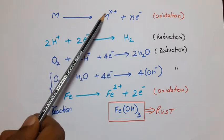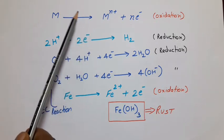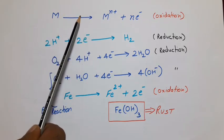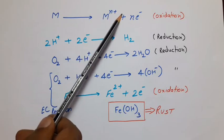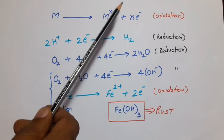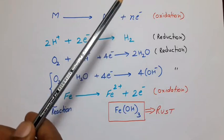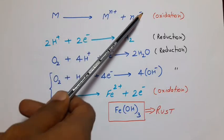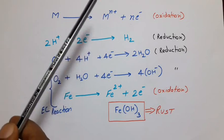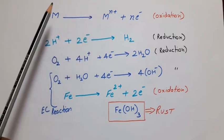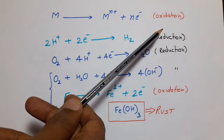The occurrence of oxidation reaction is very easy. It only requires a metal and presence of oxygen. The only oxidation does not cause corrosion. To complete the electrochemical reaction, reduction should also happen so that the electrons which are released in oxidation process can be used. Now, if we have free electrons, then there are a number of situations for which reduction can take place.